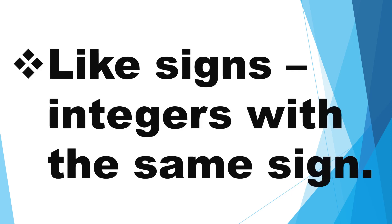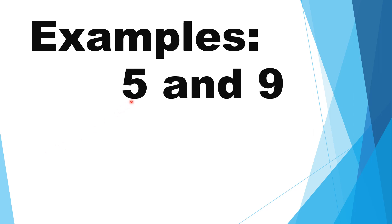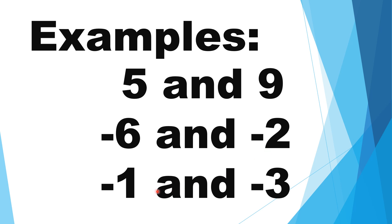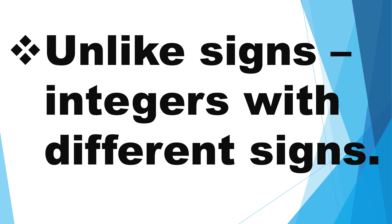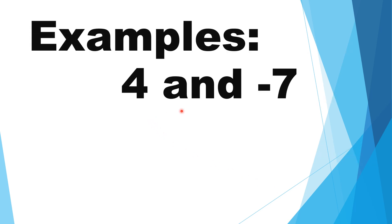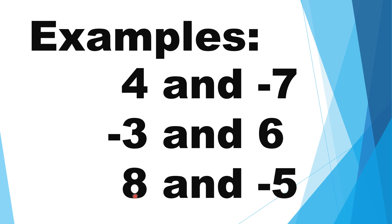Like signs are integers with the same sign. Examples: positive 5 and positive 9; negative 6 and negative 2; negative 1 and negative 3. Unlike signs are integers with different signs. Examples: positive 4 and negative 7; negative 3 and positive 6; positive 8 and negative 5.